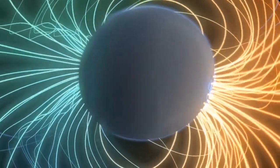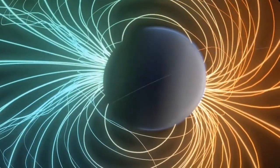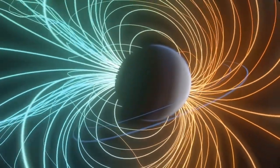Neptune's magnetic field is also strongly tilted, resulting in a lopsided magnetic shield with its poles occasionally exposed to the solar blast.